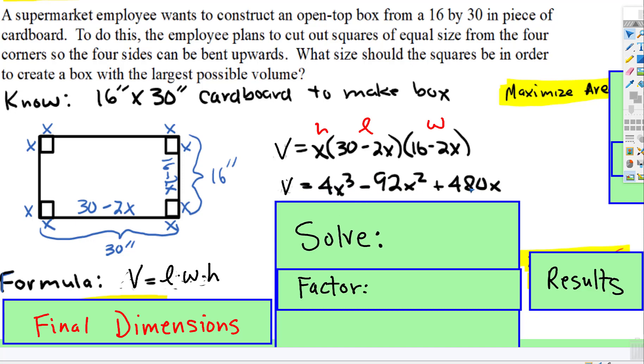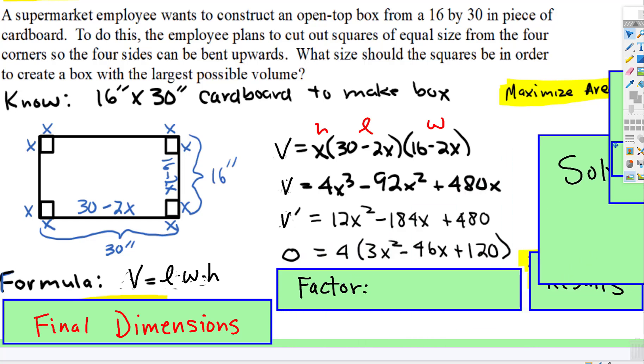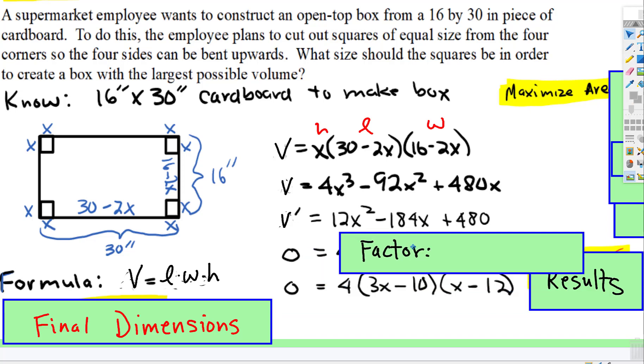Now we're going to take the derivative of this function. And then, you're going to factor out what they have in common. I think they have a 4 in common. Yeah, they have a 4 in common, leaving that. And, if you're not great at factoring, just use the quadratic formula to solve for the x, but if you are decent at factoring, that's great.